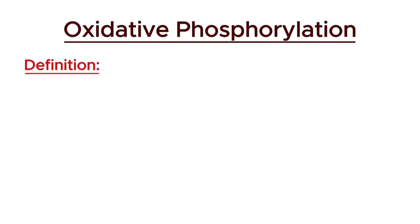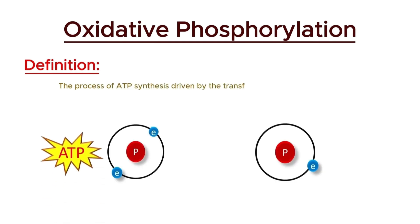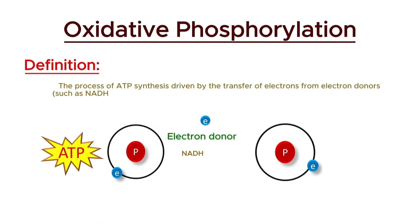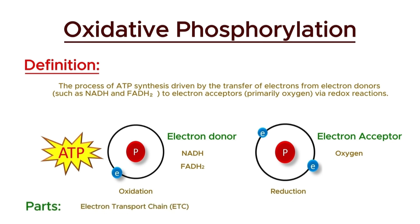Oxidative phosphorylation is the process of ATP synthesis driven by the transfer of electrons from electron donors such as NADH and FADH2 to electron acceptors — primarily oxygen — via redox reactions. This process consists of two main parts: the electron transport chain and chemiosmosis.